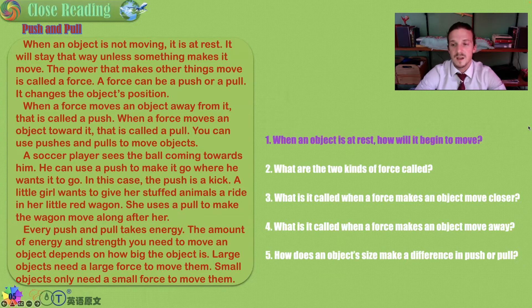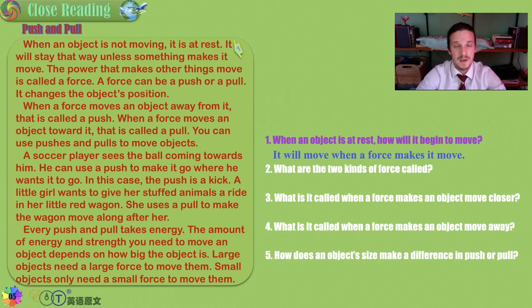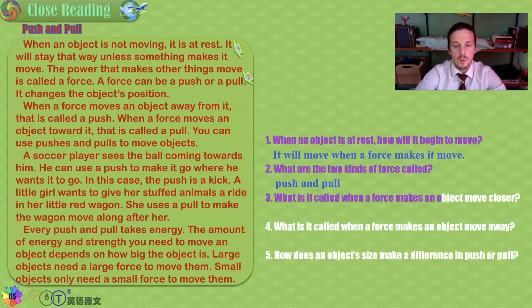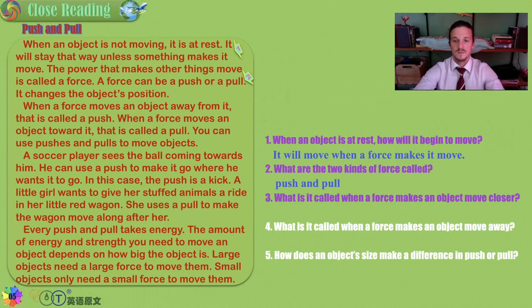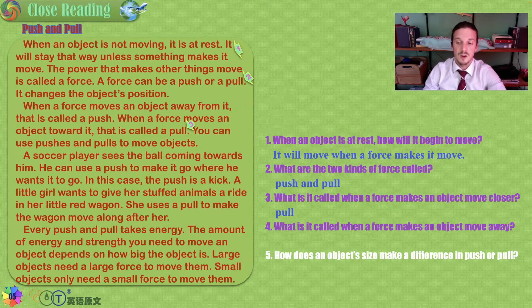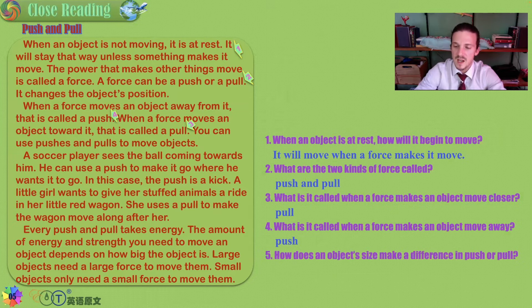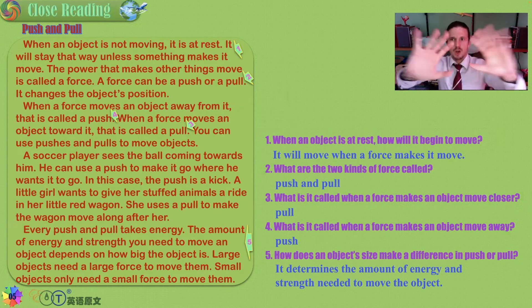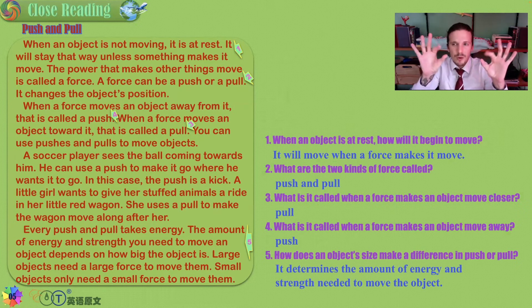When an object is at rest, how will it begin to move? It will move when a force strong enough makes it move. What are the two kinds of forces called? Push and pull. What is it called when a force makes an object move closer? That is the pull. What is it called when a force makes an object move away? That is the push. How does an object's size make a difference? It determines the amount of energy needed — the larger the object, the larger the push or pull required.